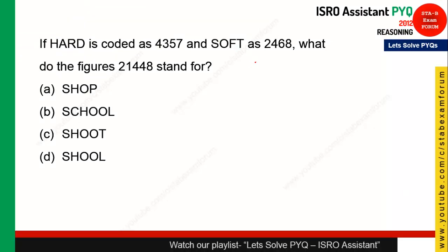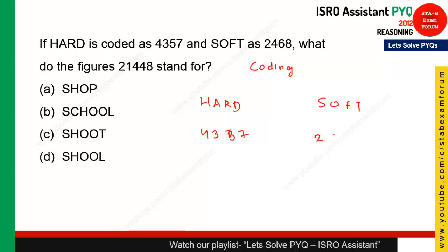The next question is from coding-decoding. 'Hard' is coded as 4 3 2 7 and 'soft' is coded as 2 4 6 8. As you can see, there is a one-to-one relationship between letters and digits. For example, 4 stands for 'o'.